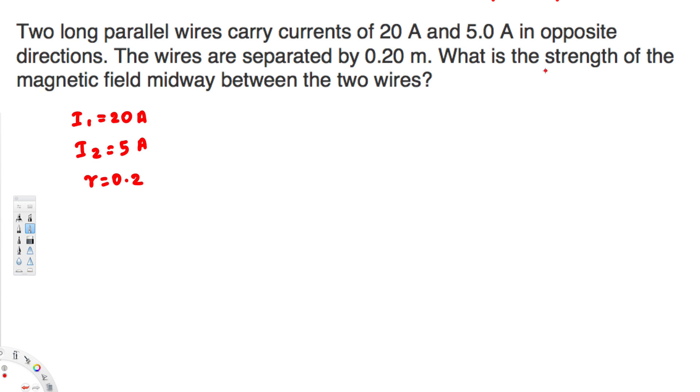The question here is asking to find the strength of the magnetic field, okay? So we are trying to find the magnetic field. Since this is a long parallel wire, we can use the equation: B = μ₀I/(2πr).